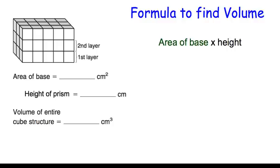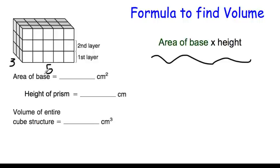Now there's a simple formula to find volume, so you don't always have to count cubes. It's the area of the base times the height. So let's find the area of the base or the bottom of this rectangular prism. We've got a width of 3 and a length of 5, so 3 times 5 is 15 centimeters squared — that's the area of the base. And now we count the height: 1, 2, 3 layers, so our height is 3 centimeters.